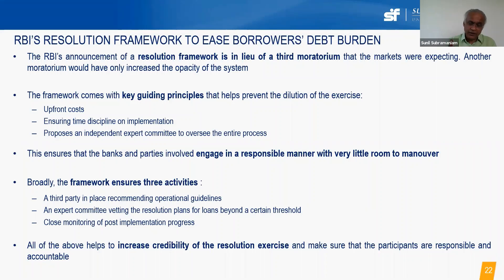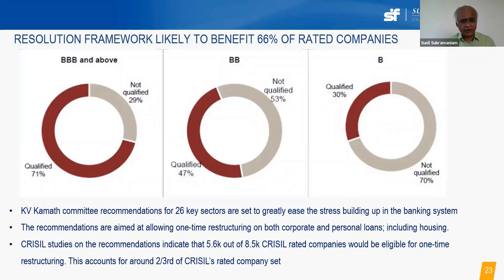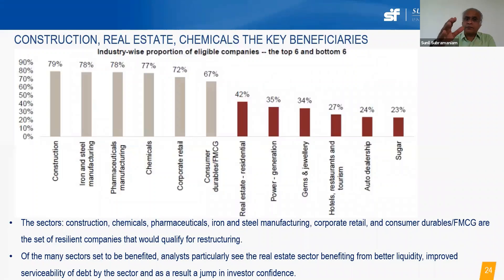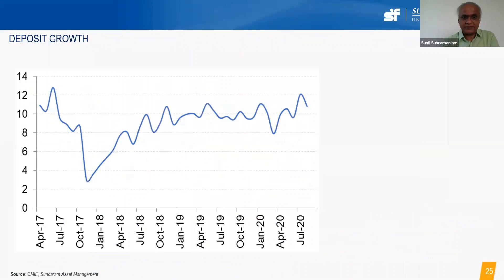The Kamath Committee framework found that 66% of rated companies would benefit from debt restructuring, depending on credit quality. Industries likely to benefit include construction, real estate, and chemicals. For the banking sector, potential NPAs would become standard assets as loans are restructured with additional repayment time — positive for both recipient companies and banks. Bank deposit growth has broadly risen since the beginning of the calendar year, which is good news for banks, though their lending has come down sharply.